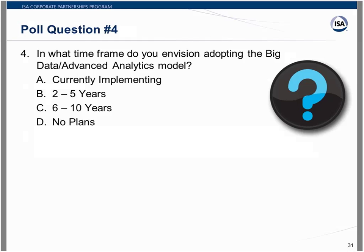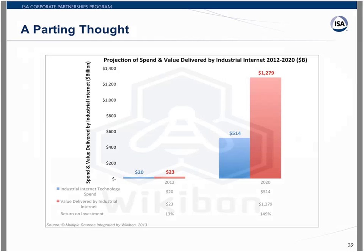Poll question number four: in what timeframe do you envision adopting the big data and advanced analytics model? As a parting thought, data from multiple sources integrated by Wikibon in 2013 projected spend and value delivered by the Industrial Internet of Things to 2020 — estimating a $514 billion expenditure to develop it, with an expected value delivered at $1.2 trillion. So it's coming, but we have to make sure we've done everything we can to be prepared for it and understand the consequences.